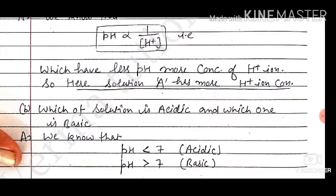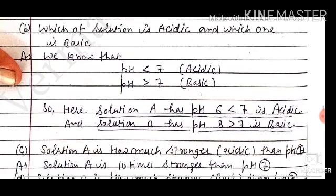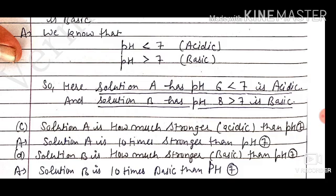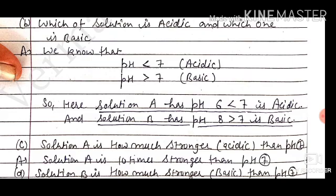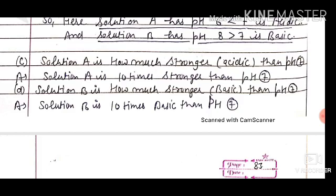Which solution is acidic and which is basic? The solution with less pH has more H-ion concentration and is acidic. Solution A with pH 6 is acidic, and solution B with pH 8 is basic. The solution with less pH value is acidic, and the one with higher pH value is basic.